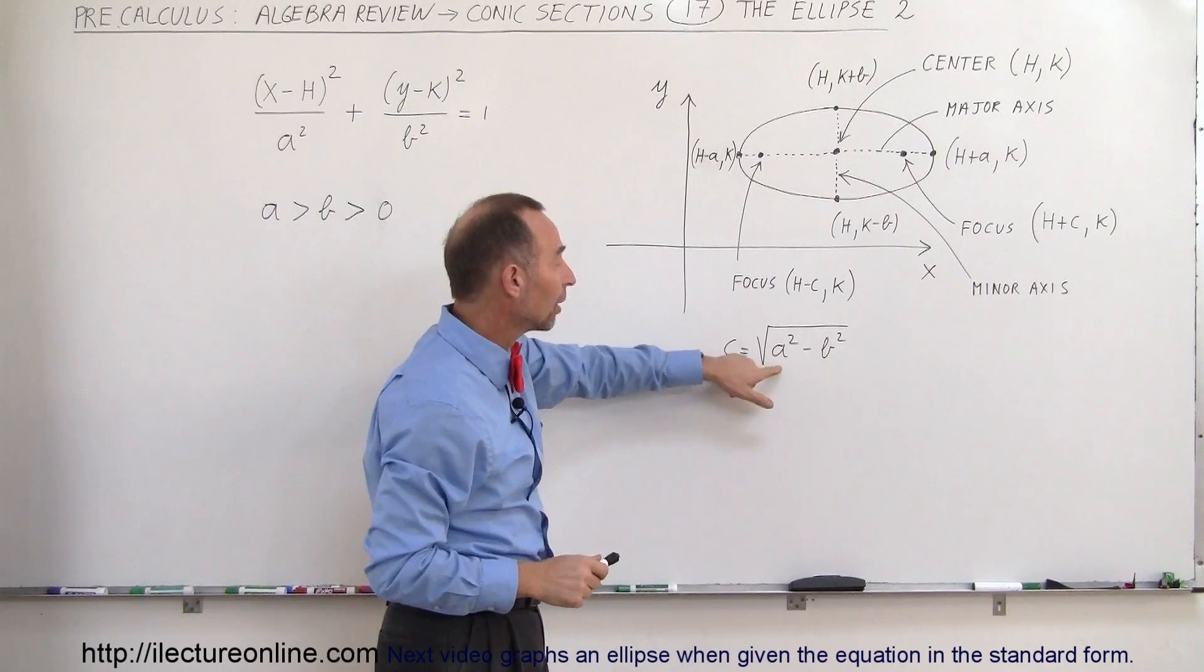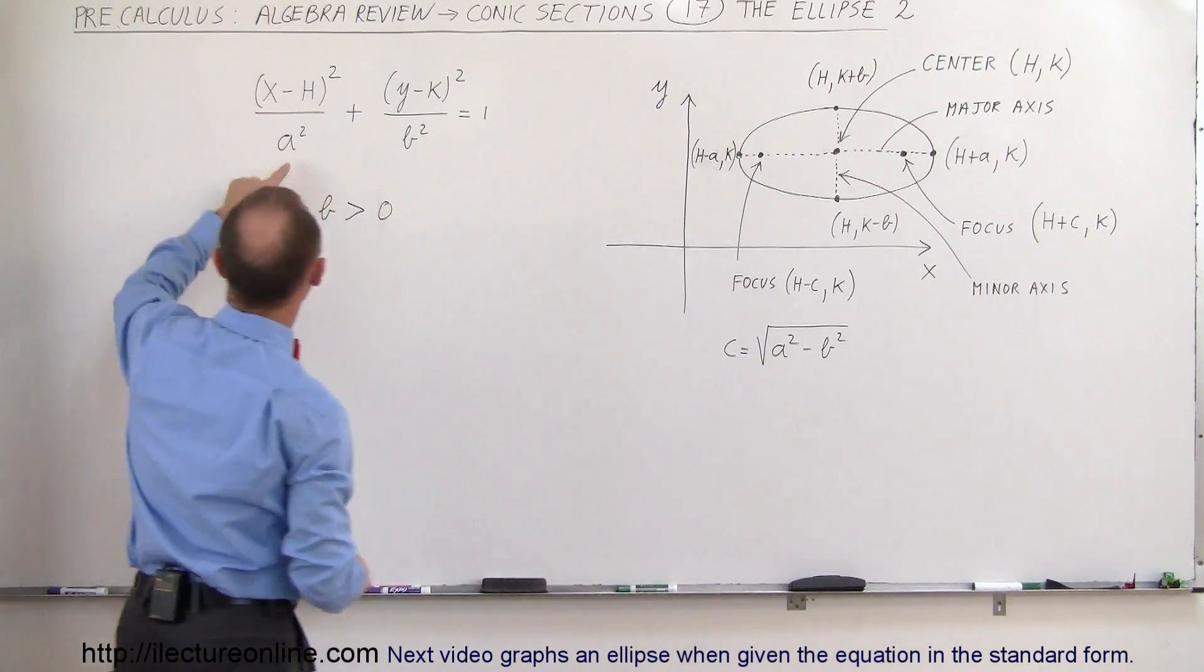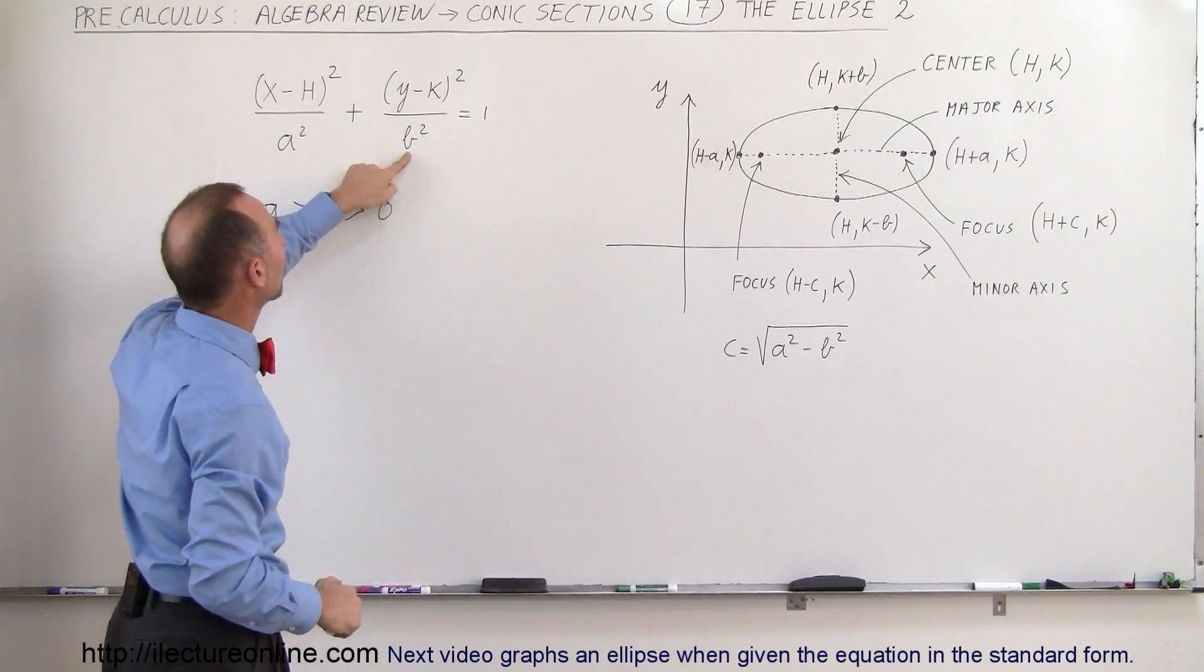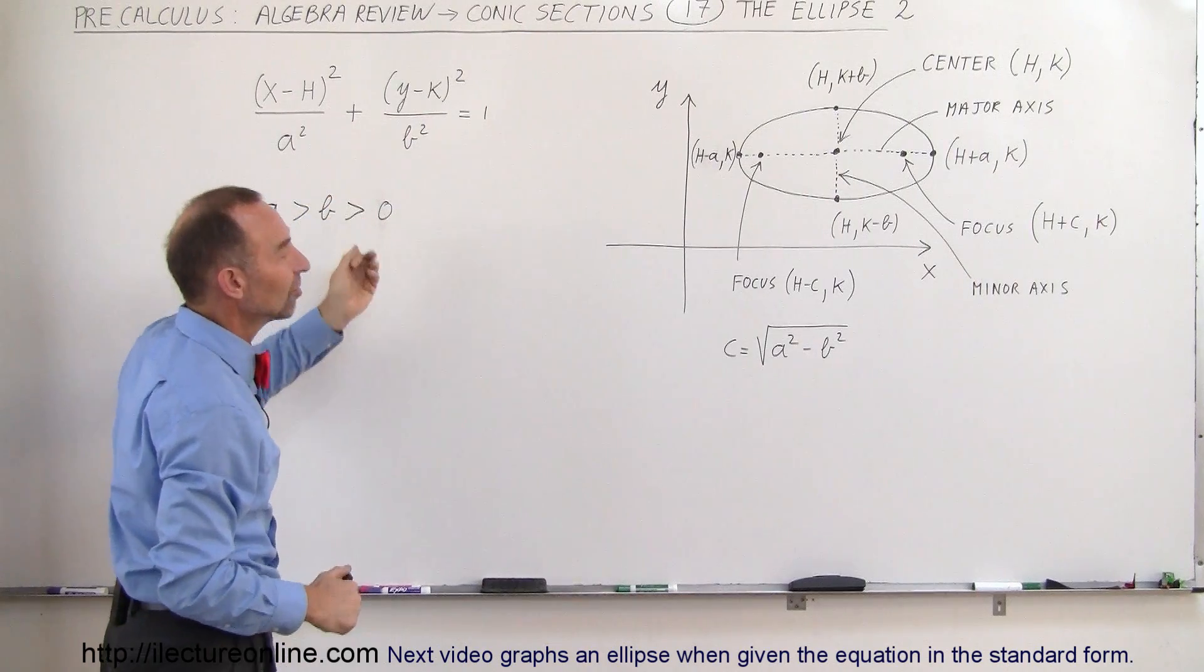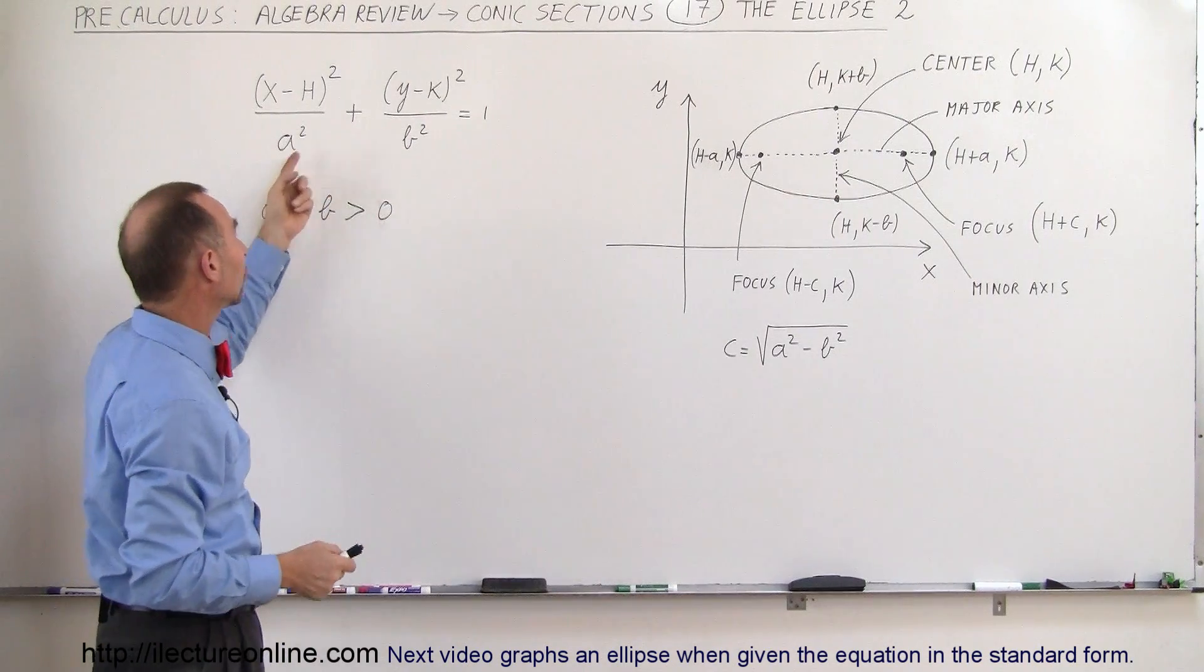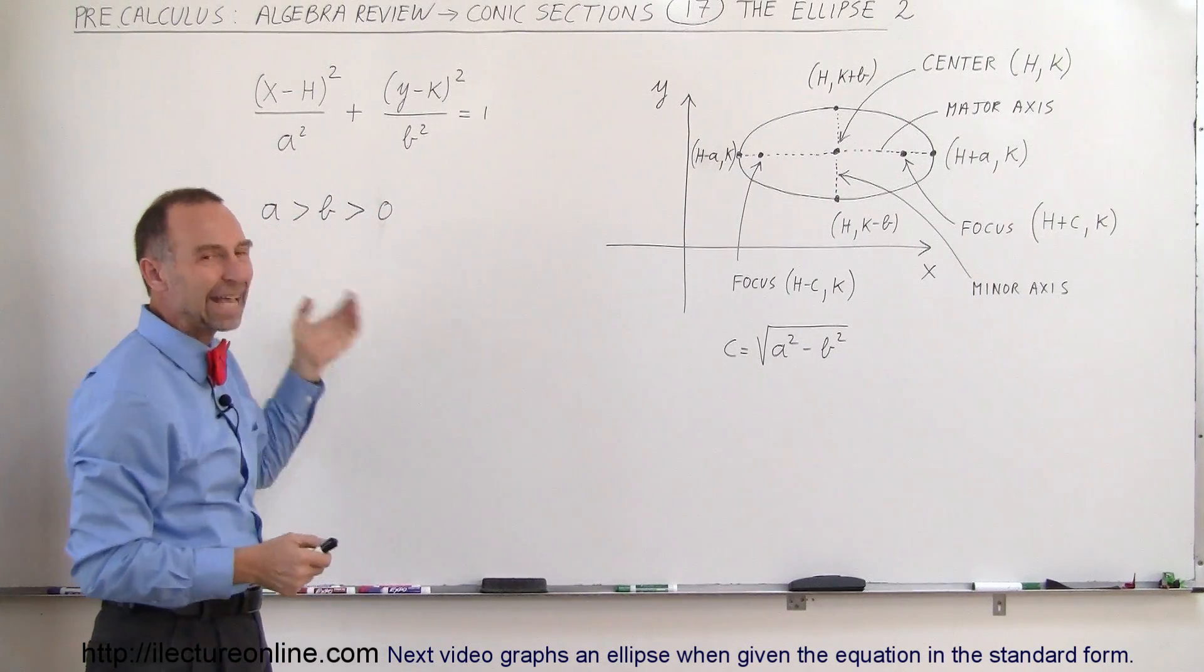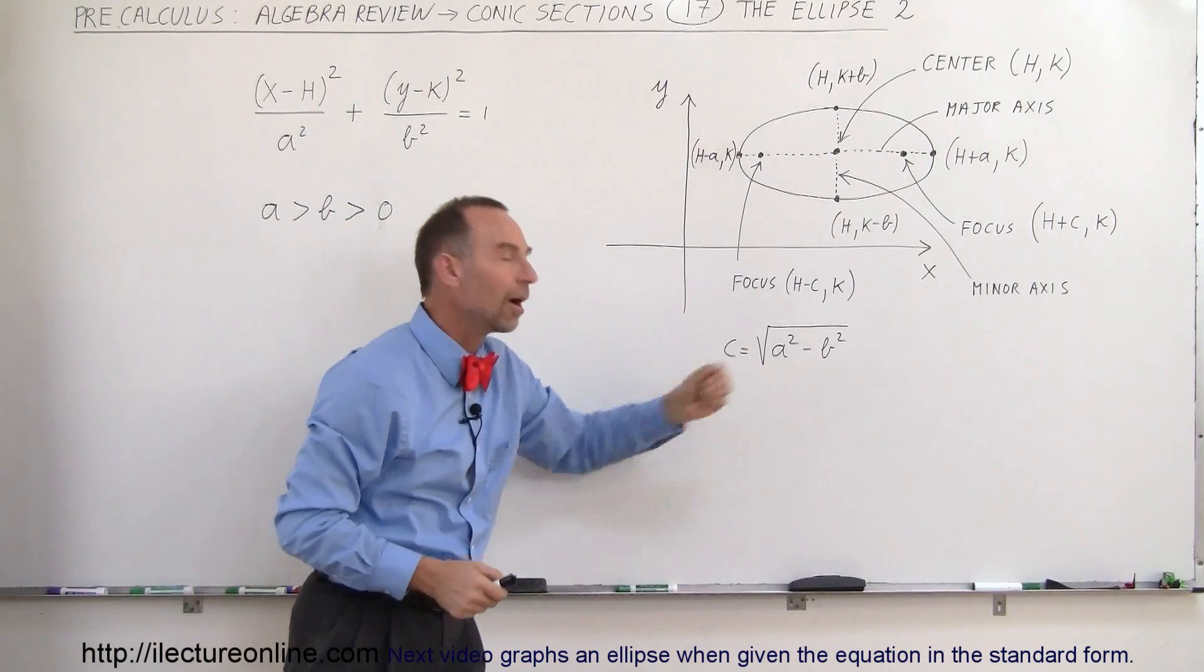Now, c here is equal to the square root of a² minus b², a² being this number right here, b² being that number right there. And so c simply is the square root of a² minus b², assuming of course that a is bigger than b, so this is always a positive number.